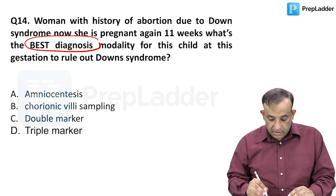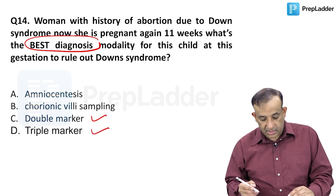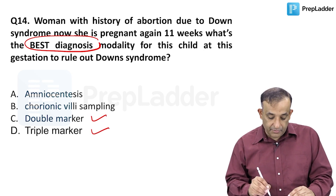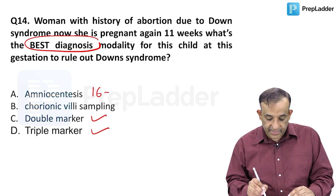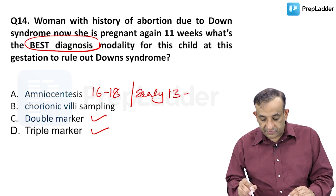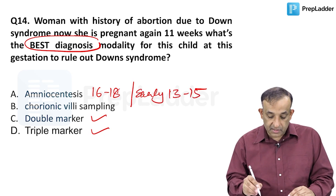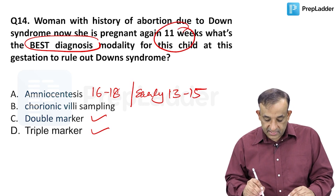So we cannot do a screening test — double marker or triple marker are not appropriate here. Amniocentesis has an ideal time of 16 to 18 weeks, and early amniocentesis is 13 to 15 weeks. The pregnancy is only 11 weeks, so amniocentesis is not suitable at this point.